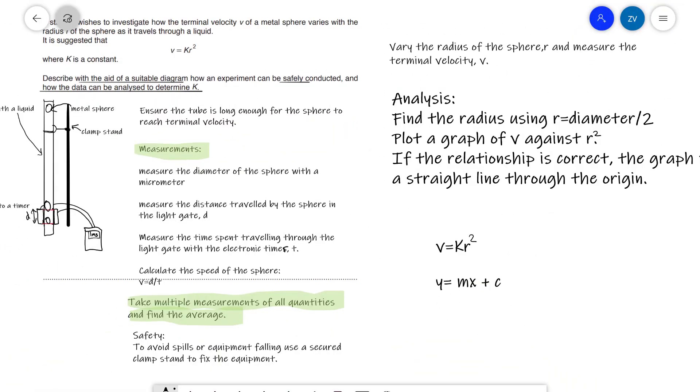So this is quite a detailed list of measurements, but I really want to ensure that you guys have the maximum chance of achieving the full six marks in those questions. And also to ensure that we get full marks, I've added a little bit of a safety section. So just to avoid spills or any equipment falling, I've said that I've used a secured clamp stand to actually fix the equipment. In general, in this experiment, we're going to be varying the radius of the sphere r, but we're going to be measuring the effect on the terminal velocity v.